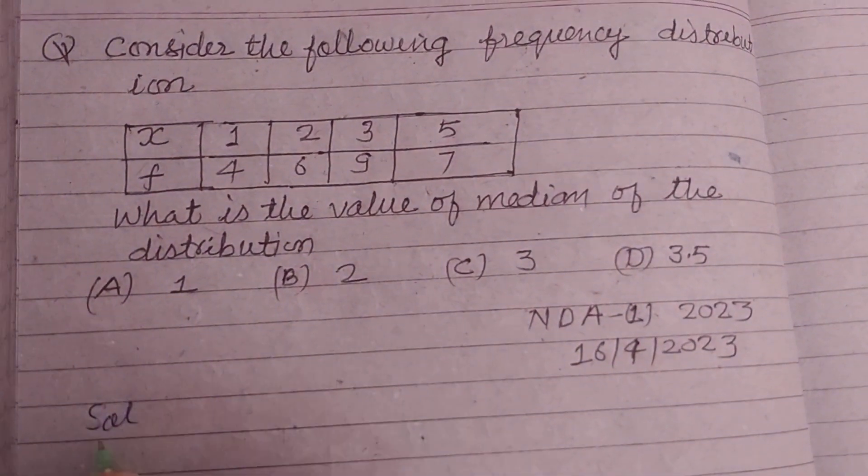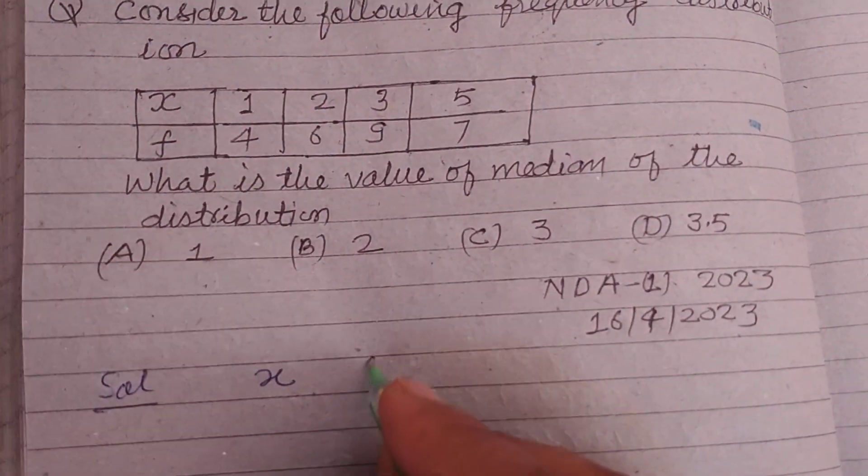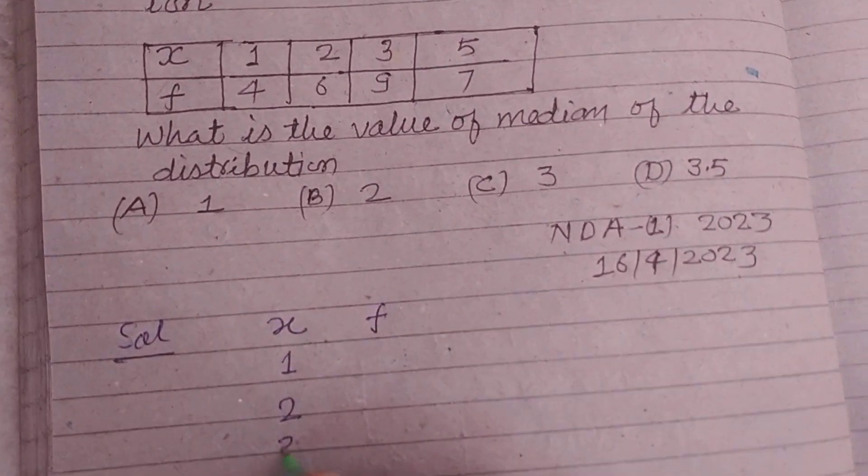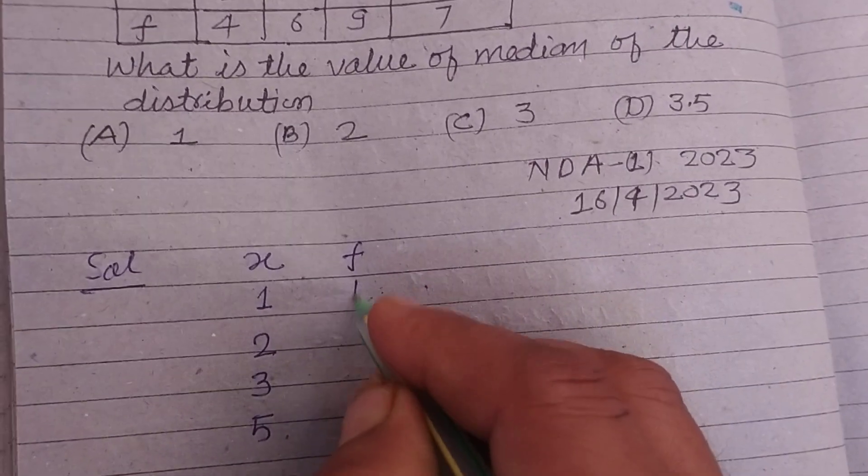First, we write the given table. x values are 1, 2, 3, 5, and frequency f values are 4, 6, 9, 7.